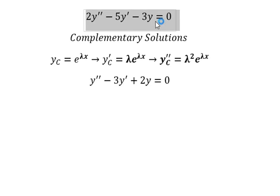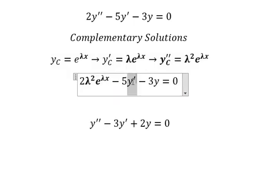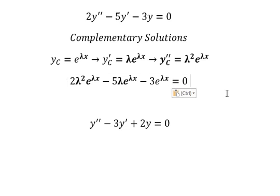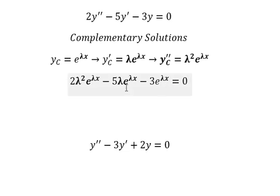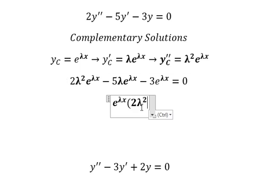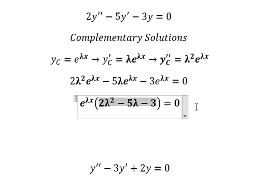Now we substitute each term into the equation — this one goes in here, this one goes in here, and this one goes in here. Now we can factor out e to the power of lambda x, and we have the characteristic equation like this.